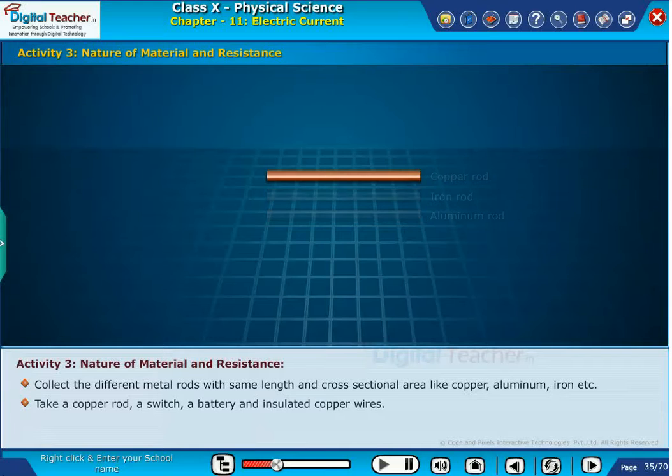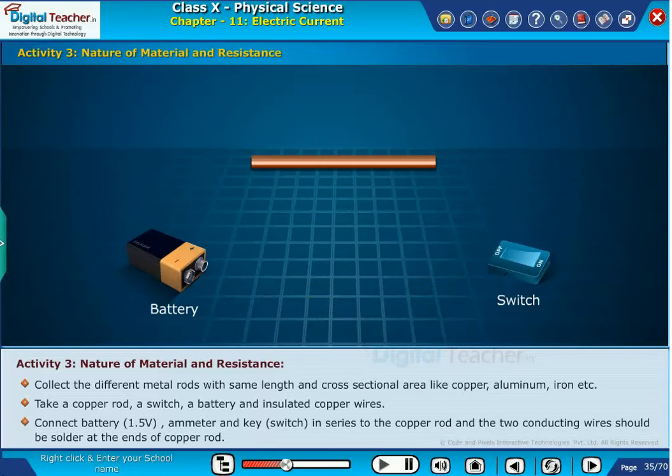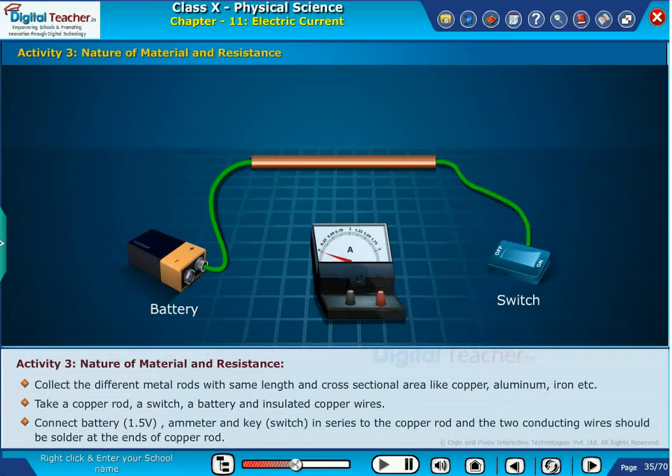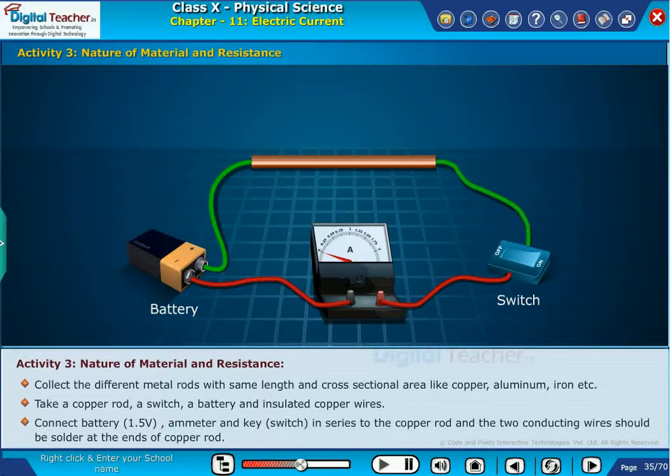Take a copper rod, a switch, a battery and insulated copper wires. Connect battery 1.5 volts, ammeter and key switch in series to the copper rod and the two conducting wires should be soldered at the ends of copper rod.